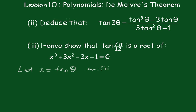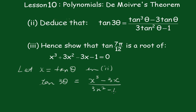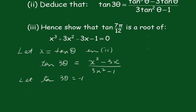Letting x equal tanθ in part two, we get tan3θ equals (x³ − 3x) over (3x² − 1). Now if I then let tan3θ equal to negative 1, we should get this equation. It's a matter of playing around a little bit.